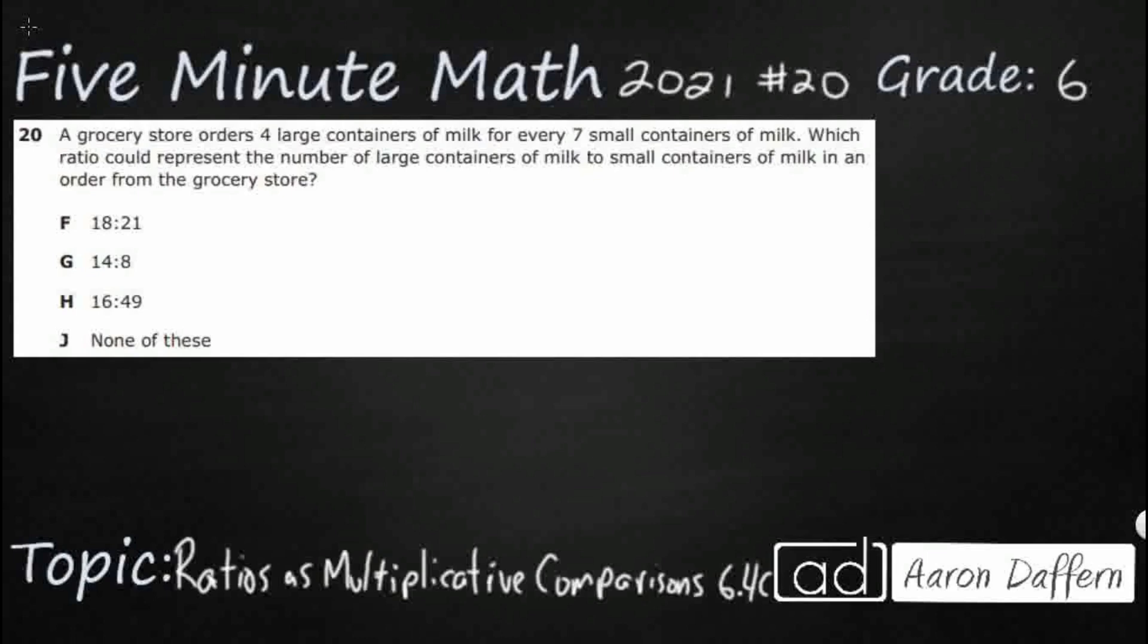So we have a ratio in this word problem here. A grocery store orders 4 large containers of milk for every 7 small containers of milk. Which ratio could represent the number of large to small? So we are at least staying in the same order there. So we have a ratio of 4 to 7.